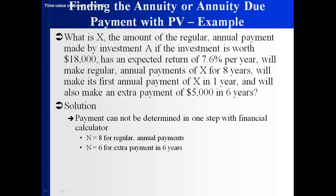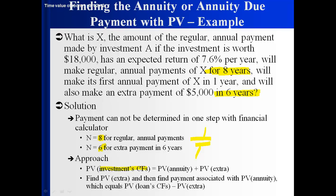We're going to take advantage of the fact that the present value of all of these cash flows is equal to $18,000 when discounted at 7.6%. We cannot do this in one simple step in the financial calculator. N is eight for the regular payments, but N is six for the extra payment, and since those are not equal, we can't do it in one step. Remember, N has double duty — it's the number of payments and also the distance between PV and FV. So we'll take advantage of the fact that the present value of all the investment's cash flows equals the present value of the annuity (the eight regular payments of X) plus the present value of the extra $5,000 in six years, and together they equal $18,000.